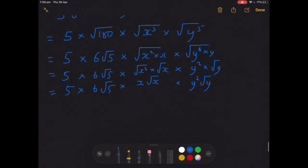Where does that leave us? We need to multiply all the things that are in front of the roots together. So 5 times 6 times x times y squared, which is 30xy squared. And then underneath the square root symbol, we're going to have 5 times x times y: 5xy.